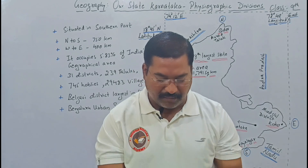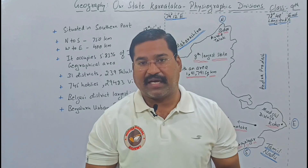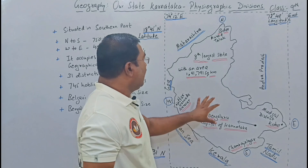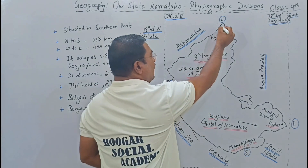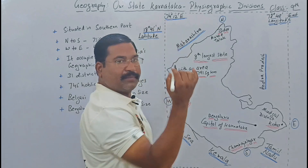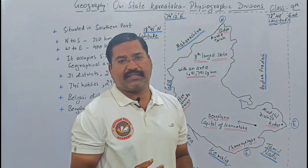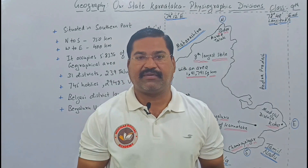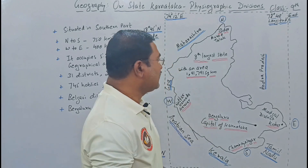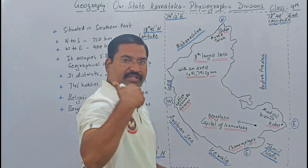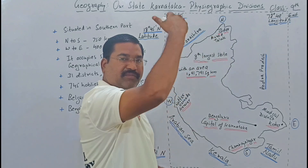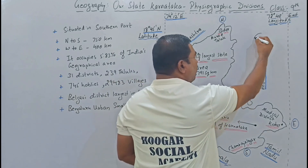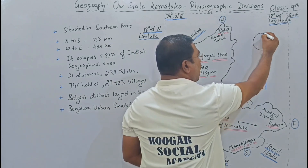Karnataka is one of the wonderful states of our country called India. Now being part of Karnataka, you can observe the map here. To understand any country or state using a map, the most important thing is to know about the latitudinal and longitudinal lines. As you have studied in your eighth standard, latitudinal lines are lines which pass from west to east, and longitudinal lines run from the north pole to the south pole.